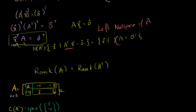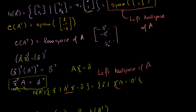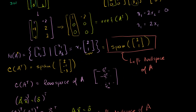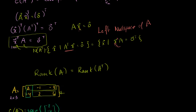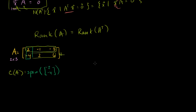We also know that the left null space, or the null space of our transpose, was equal to the span of the R2 vector (2, 1).